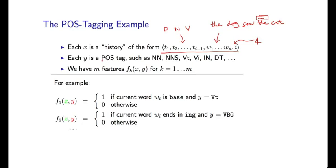Each label y is a part-of-speech tag — one of, say, 30, 40, or 50 tags typically seen in a given language. We assume we have m features f_k(x, y). Each of these features takes an entire (x, y) pair and returns some real value. We make heavy use of indicator functions, which return 0 or 1 depending on whether some property of x paired with y is true.